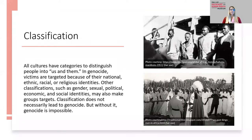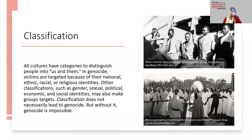The first stage is classification. Classifications are when all cultures have categories to distinguish people into 'us versus them.' In genocide, victims are targeted because of their national, ethnic, racial, or religious identities. Other classifications — such as gender, sexual, political, economic, or social identities — may also make a group a target. Classification does not necessarily need to lead to genocide, but without it, genocide is impossible. This stage appears always in the process of genocide, but it frequently appears in society and does not need to lead there.